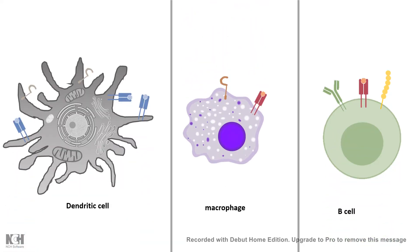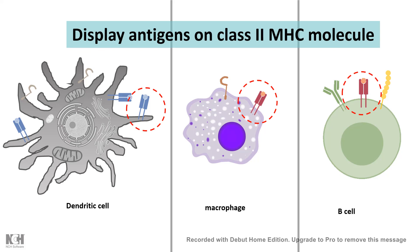Let's introduce our antigen presenting cells. They are dendritic cells, macrophages, and B cells. All of these cells have something in common — all of them display antigens on class 2 MHC molecules.